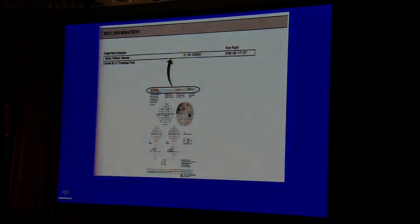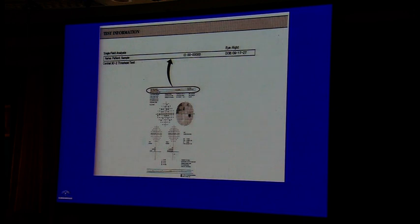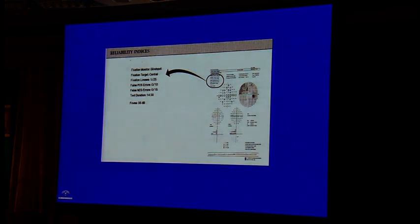Any visual field printout contains basic test information identifying the subject, the type of field test performed, and the eye tested. The date of birth is included to calculate age, since the patient's retinal sensitivity must be compared to age-corrected normative data. The most important reliability indices are fixation losses, false positive errors — where the patient responds inappropriately producing abnormally high sensitivity values — and false negative errors, where a patient fails to respond to a stimulus they previously detected.